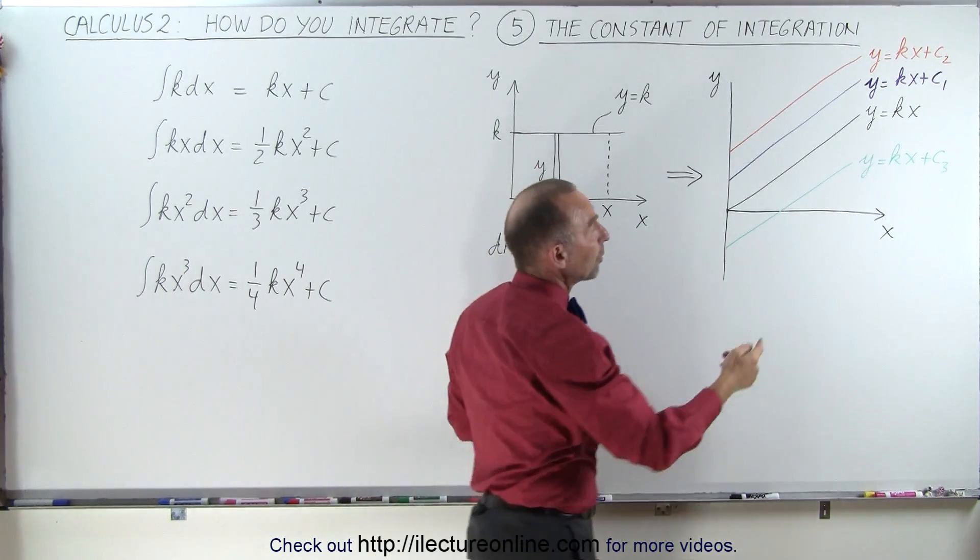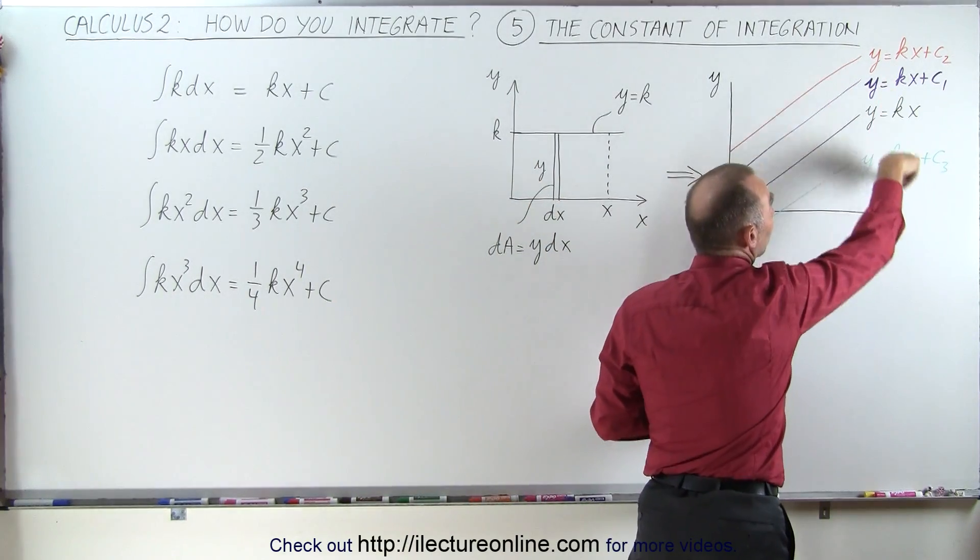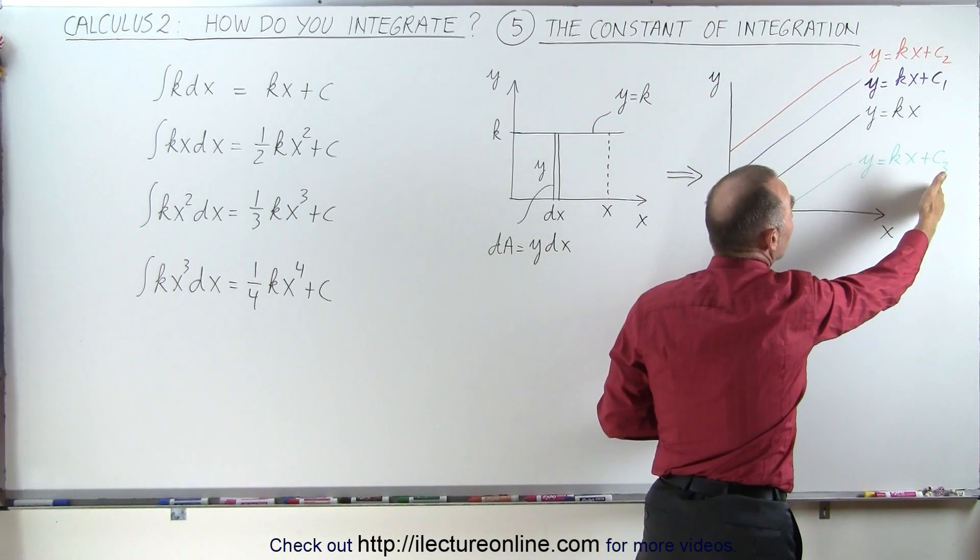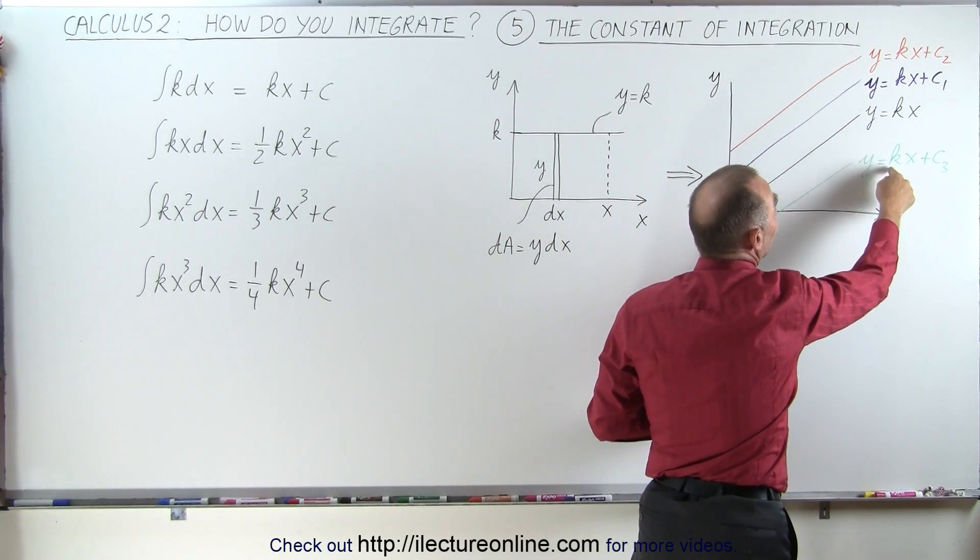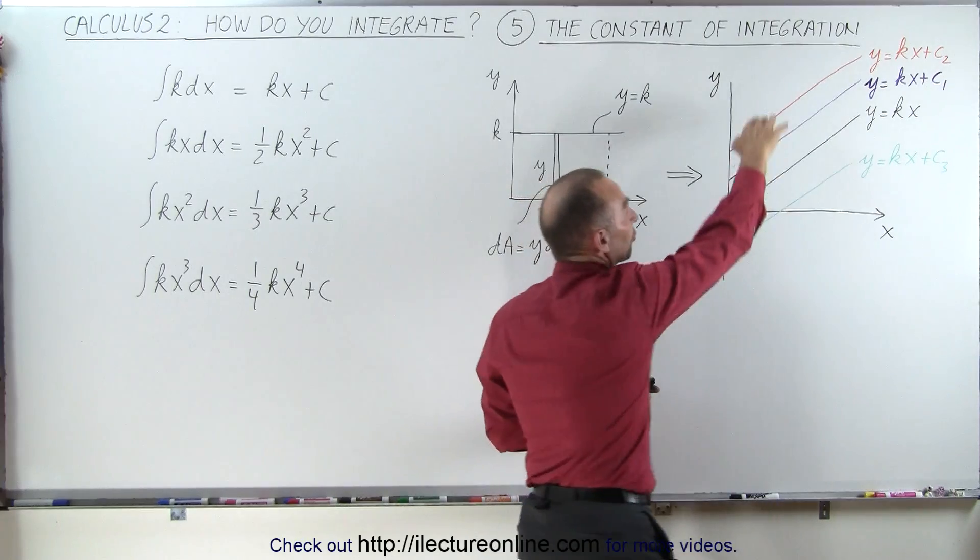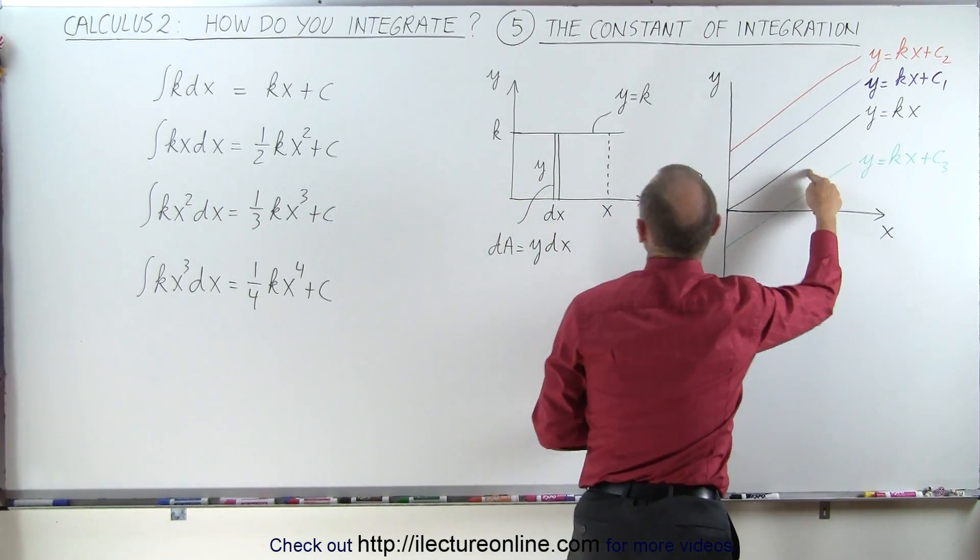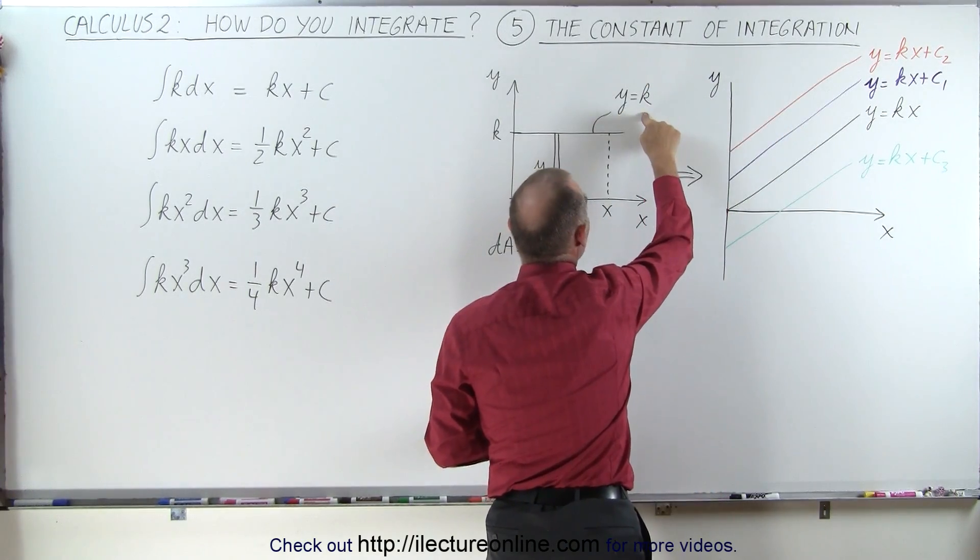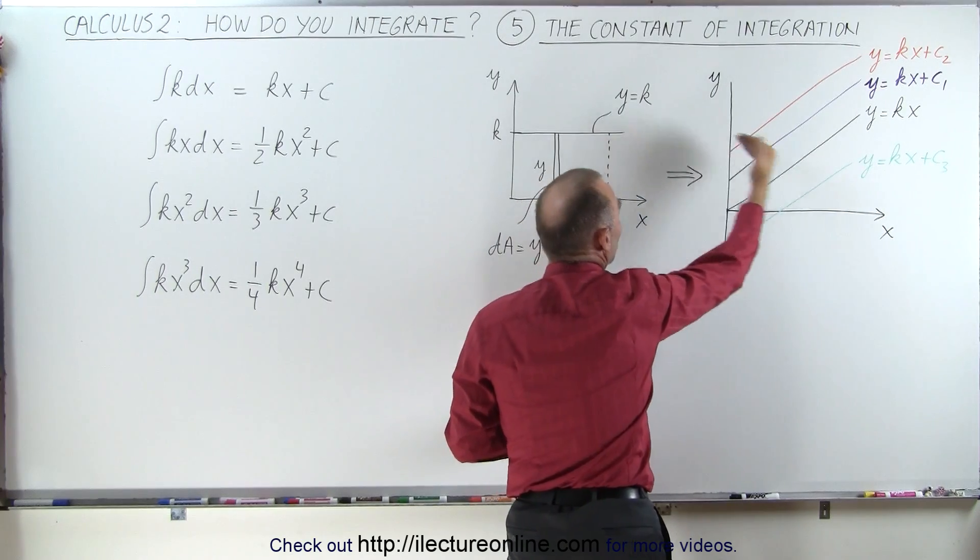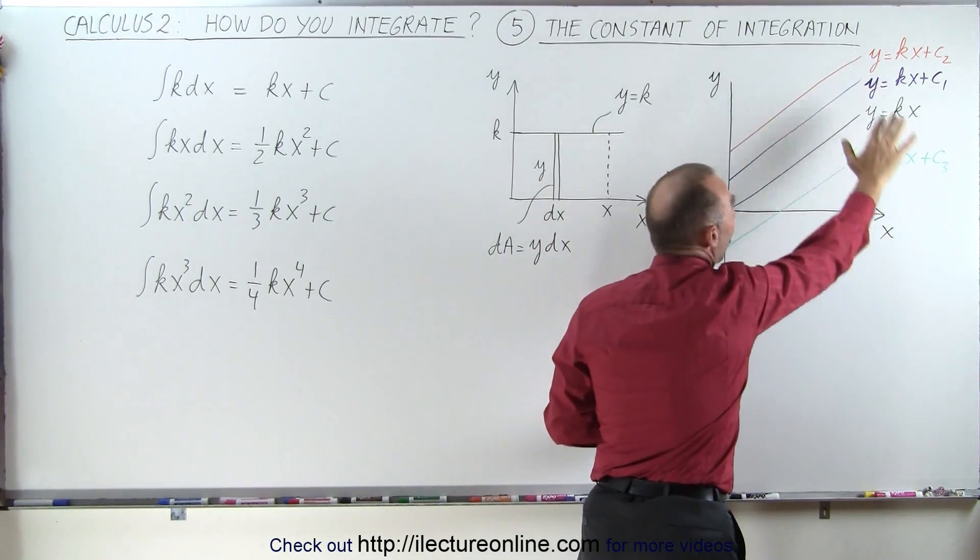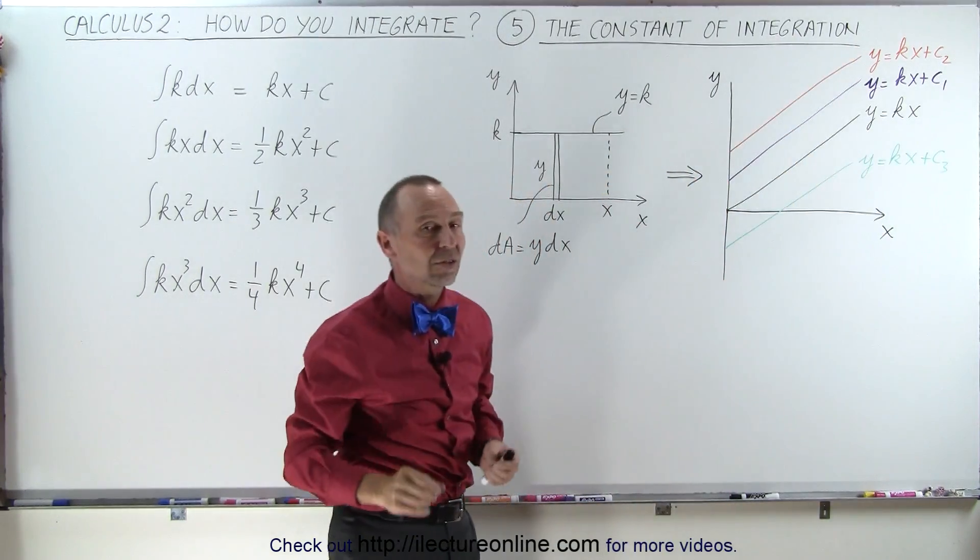The reason for that is when we take the derivative of any of these functions, the constants simply disappear, and we end up with the value k. So it doesn't matter which of these functions we differentiate, we always go back to the original y equals k. When we take the derivative, we lose all information about what that constant is.